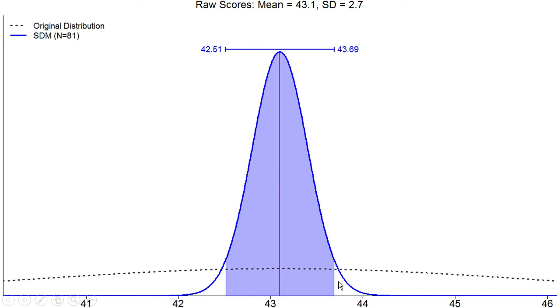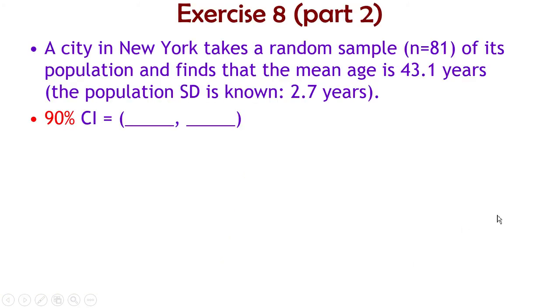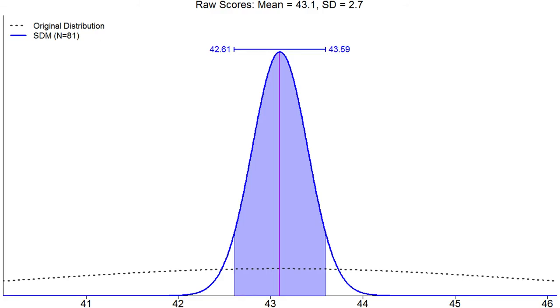So if somebody said, I think our average age of our population is 45, you'd reject that because that's not in our confidence interval. Or if somebody said, I think it's 40, you'd reject that. If somebody said, I think our average age is about 43, you would not reject that because it's plausible. 43 is inside this confidence interval. So let's do the same thing, but with a narrower confidence interval, 90%. This is the answer that we would get. Things are a little tighter. Now it's 42.6 and 43.6. So we're 90% confident that the true mean age is between 42.6 and 43.6. And our best estimate of what that age is is 43.1 years old.